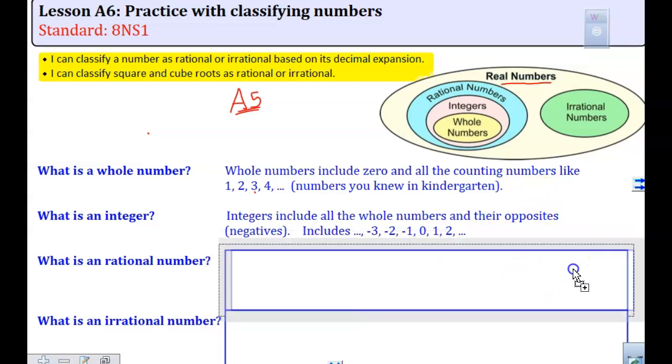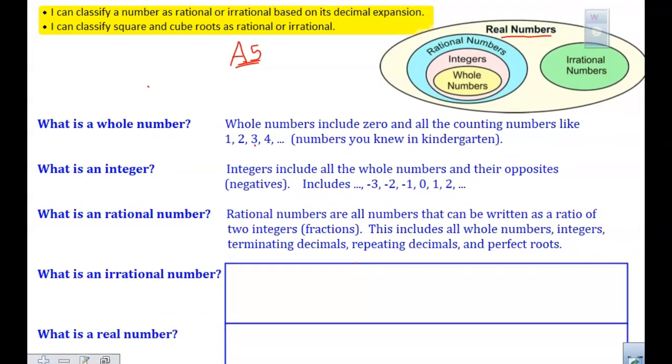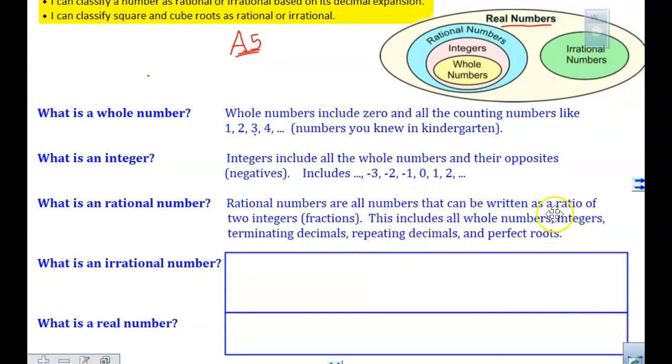When we talk about our rational numbers, rational numbers are numbers that can be written as a ratio of two integers. Really, written as a fraction. This includes all whole numbers, integers, terminating decimals that end, repeating decimals, and our perfect roots.